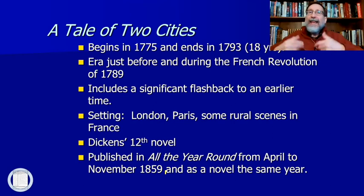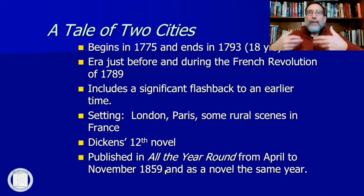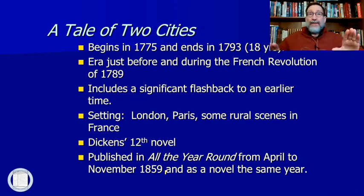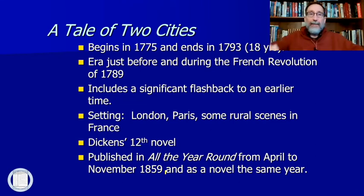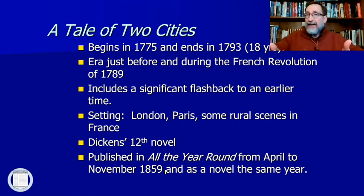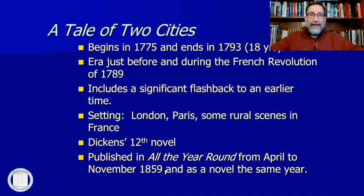The story starts just before the French Revolution of 1789 and ends during the revolution — specifically in something called the Reign of Terror, when Robespierre was in charge and had become paranoid. At that point the French revolutionaries were beheading practically anyone they thought might be a threat. If you had a trial, you were going to the guillotine — nobody escaped the French tribunals at that time. The book also includes a flashback: Dr. Manette's diary, which is absolutely key to the entire novel — we'll spend probably an entire lesson just looking at that later on.